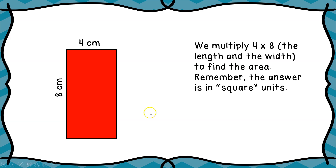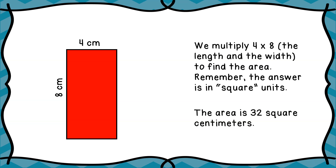Here's another rectangle. This time the length is four centimeters and the width is eight centimeters. So we're going to multiply four times eight to find the area, and the unit this time is centimeters, so we give our answer in square centimeters. Four times eight is thirty-two square centimeters.